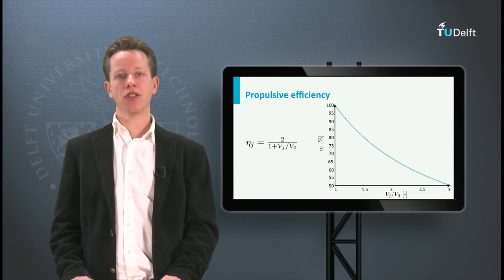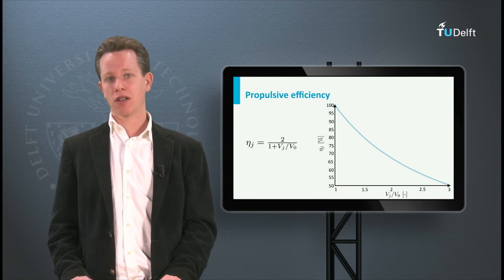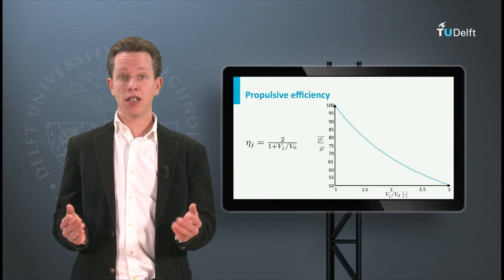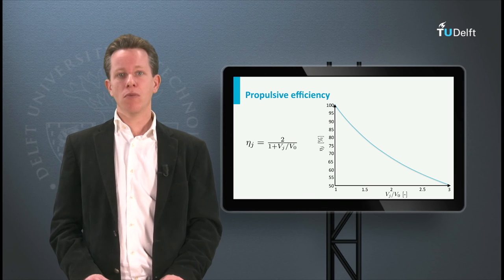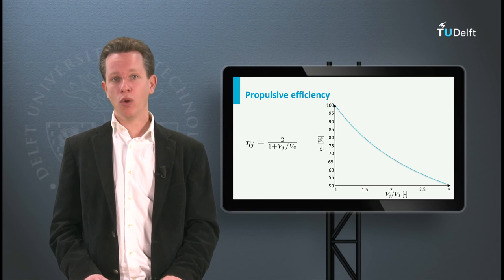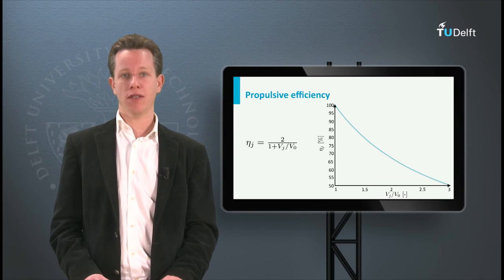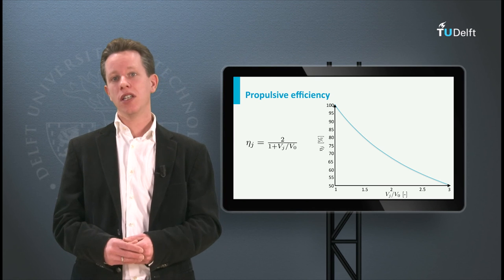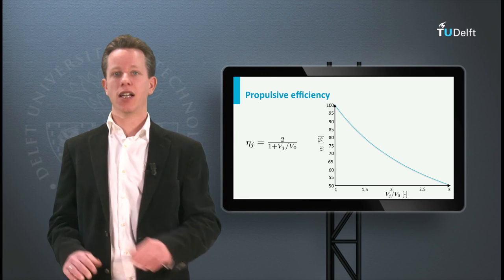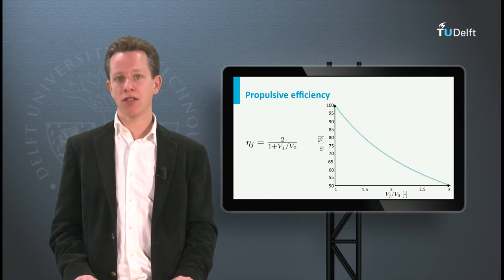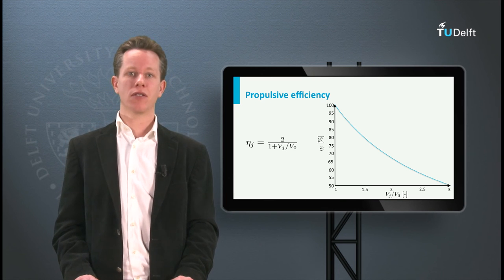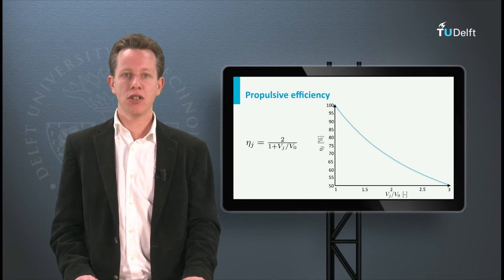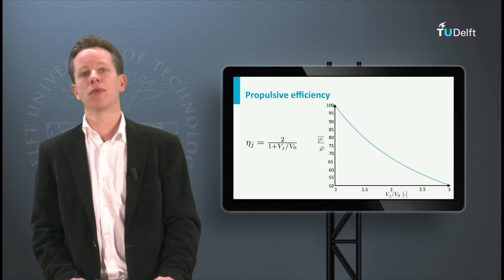In addition, I should mention that vj is always larger than the airspeed of the vehicle when a propulsion system delivers a positive force. So propulsive efficiency is always smaller than 100%. This is quite easy to understand, because in order to create thrust we need to accelerate air and leave kinetic energy in the atmosphere behind us once the aircraft has passed. This equation gives me an opportunity to make an interesting observation through a small example calculation.